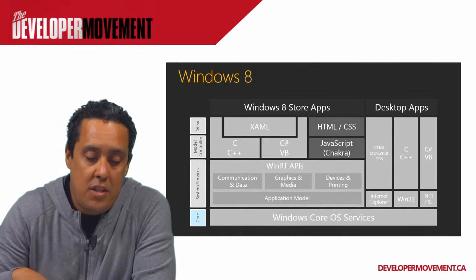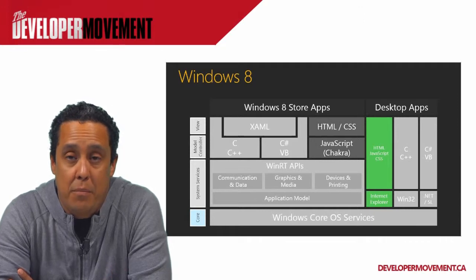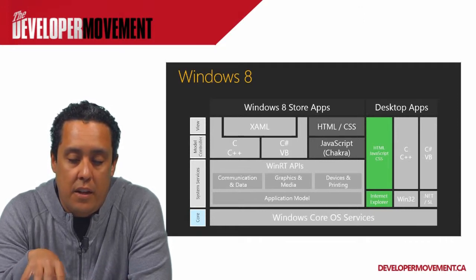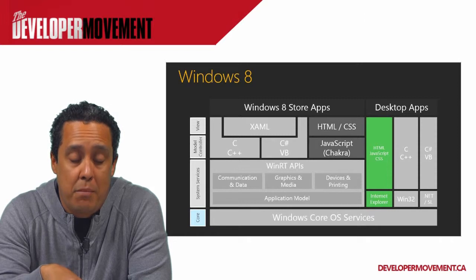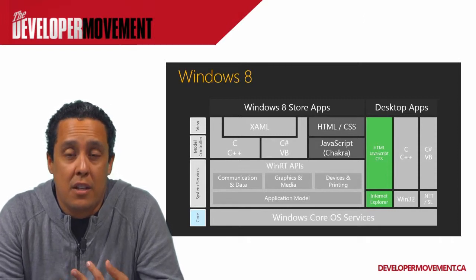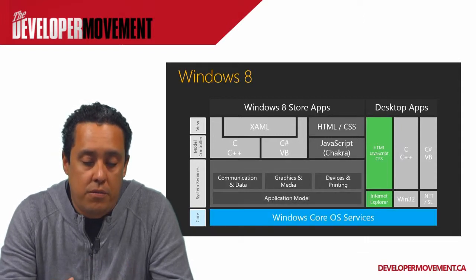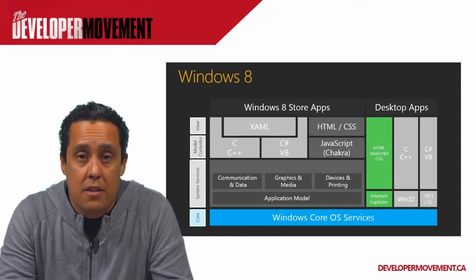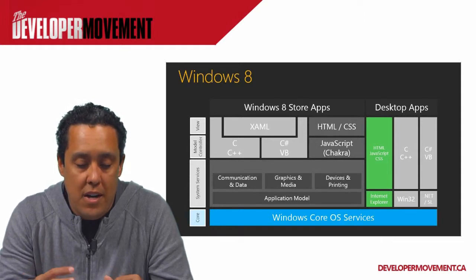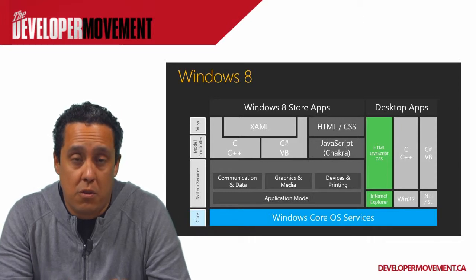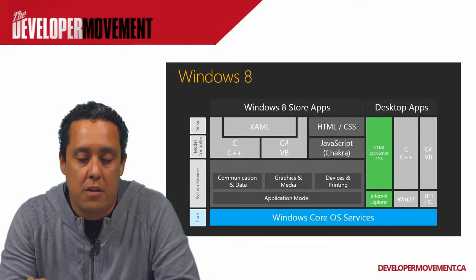The JavaScript engine running in Windows Store apps is the same engine that IE10 has on the desktop. Underneath, it connects into the WinRT APIs — the Windows Runtime APIs — which include communication and data, graphics, media, and the application model. That core WinRT framework connects into the Windows Core OS services, giving you direct access to the core Windows operating system from your HTML and JavaScript application.